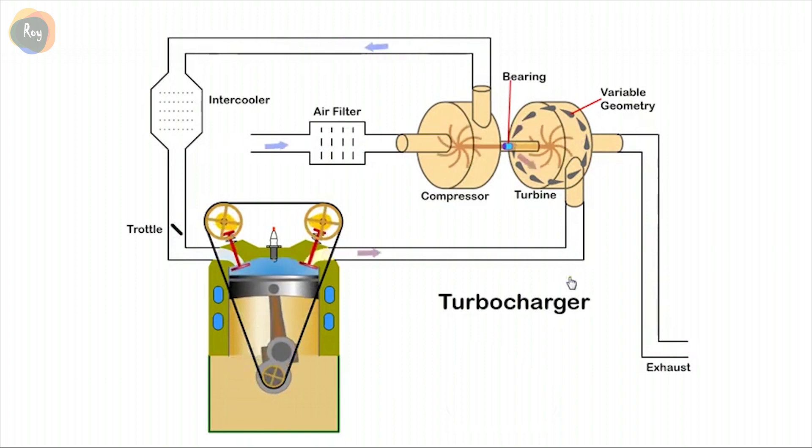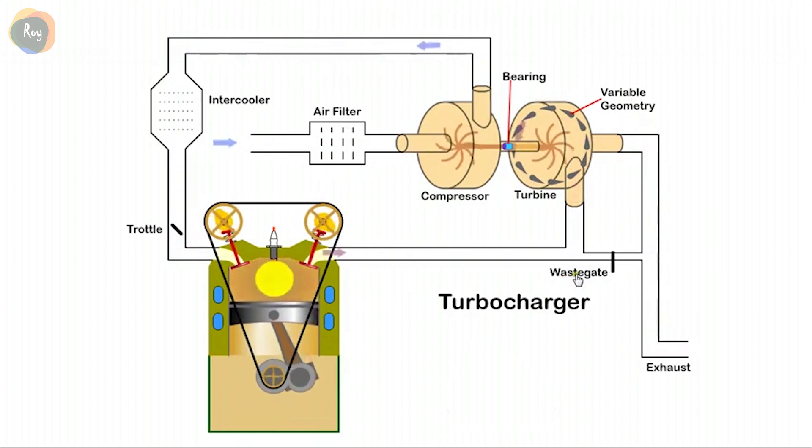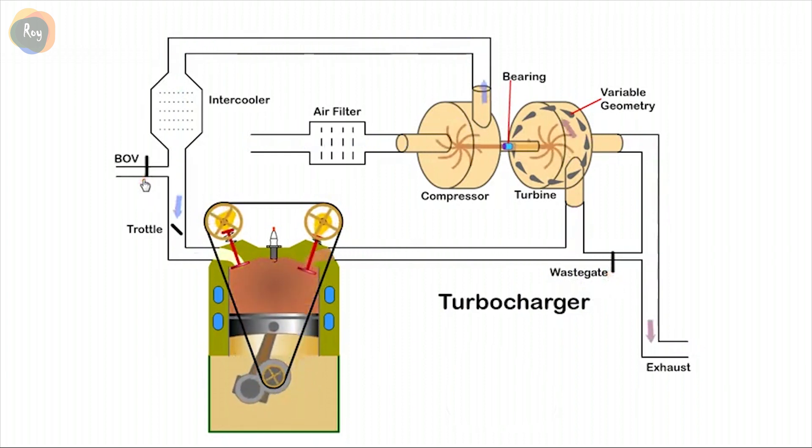Other ancillary equipment include a waste gate, which is used to bypass some of the exhaust gas from the turbine when it is not required. A BOV, blow-off valve or dump valve, is used to vent pressurized air to atmosphere when the throttle valve is closed, thus preventing damage to the compressor. It tends to make a whoosh sound when it activates.